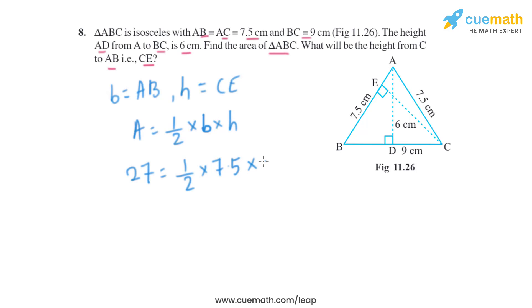And we know the area of triangle, that is 27 square centimeters. That equals to half into the base is 7.5 centimeters, and we have to find the height that is same as CE. So we can find the height from there. 7.5 H will equal to 27 into 2, which is 54. So H will equal to 54 divided by 7.5.